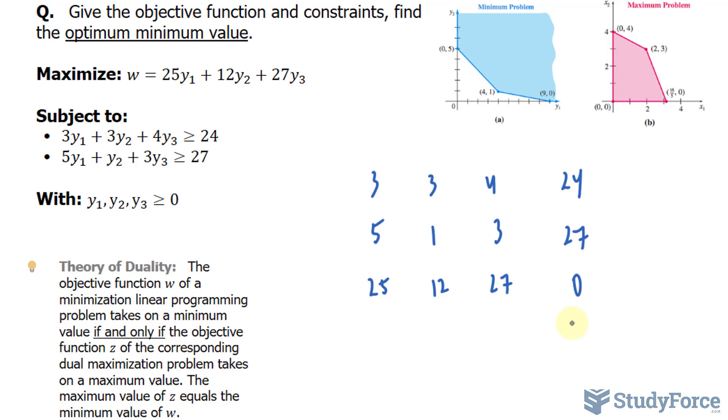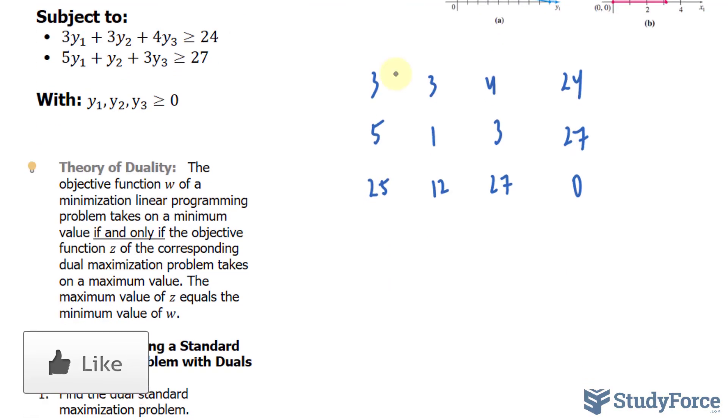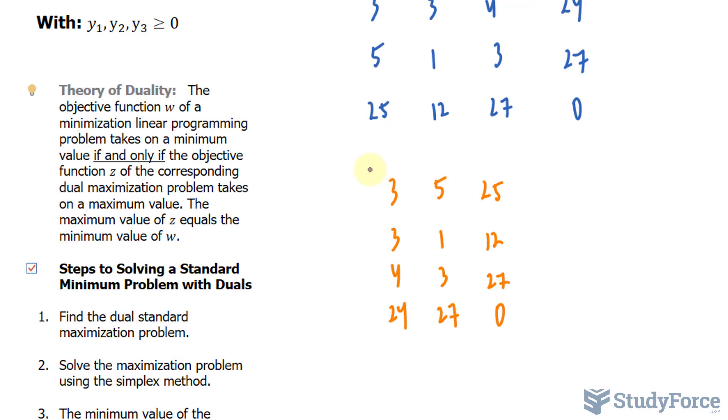Once you've done this, you want to transpose this matrix. In other words, the rows become the columns and the columns become the rows. Take, for example, row 1: we have 3, 3, 4, and 24. That becomes our first column: 3, 3, 4, and 24. Similarly over here, this becomes 5, 1, 3, and 27. And over here, 25, 12, 27, and 0. Also keep in mind that this column no longer represents y₁. This is x₁, x₂, and our constant.